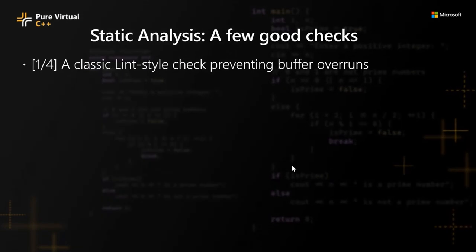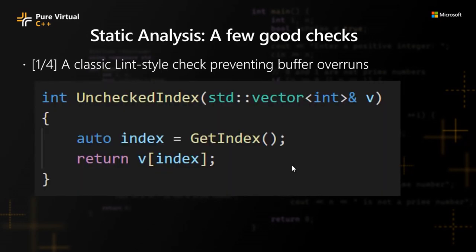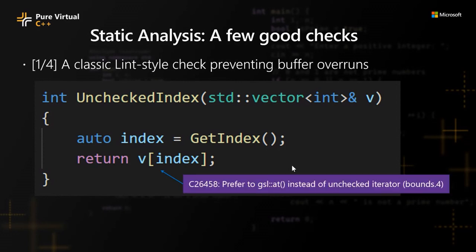For a long time people have thought of static analysis as lint-style checks, but what I'm going to show is that static analysis has evolved — you can find deep semantic errors in your code. Here's an example with a function called unchecked_index: it takes a vector reference, gets an index from wherever, and dereferences into that vector without knowing the range of that index. A static analysis check would say to use GSL::at instead of unchecked iterator access. GSL::at — for those familiar with the Guideline Support Library — terminates your program if you try to access the container out of bounds at runtime, making it a much safer alternative.